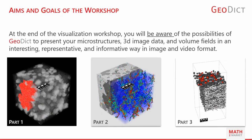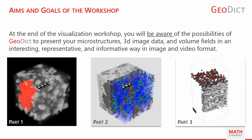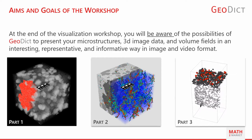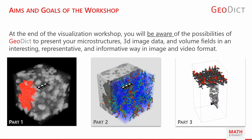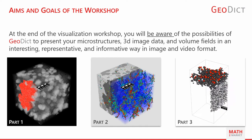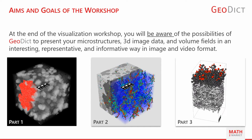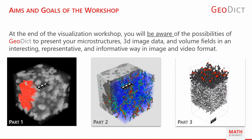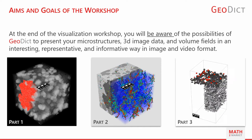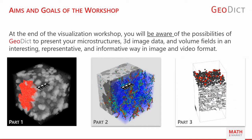This workshop is divided into three parts. In part one, we will look at how we can visualize 3D image data and the associated segmented and voxelized microstructures in an informative and appealing way. We will make sure to find a good compromise between descriptiveness and an attractive visualization. We will then save our results as image files.